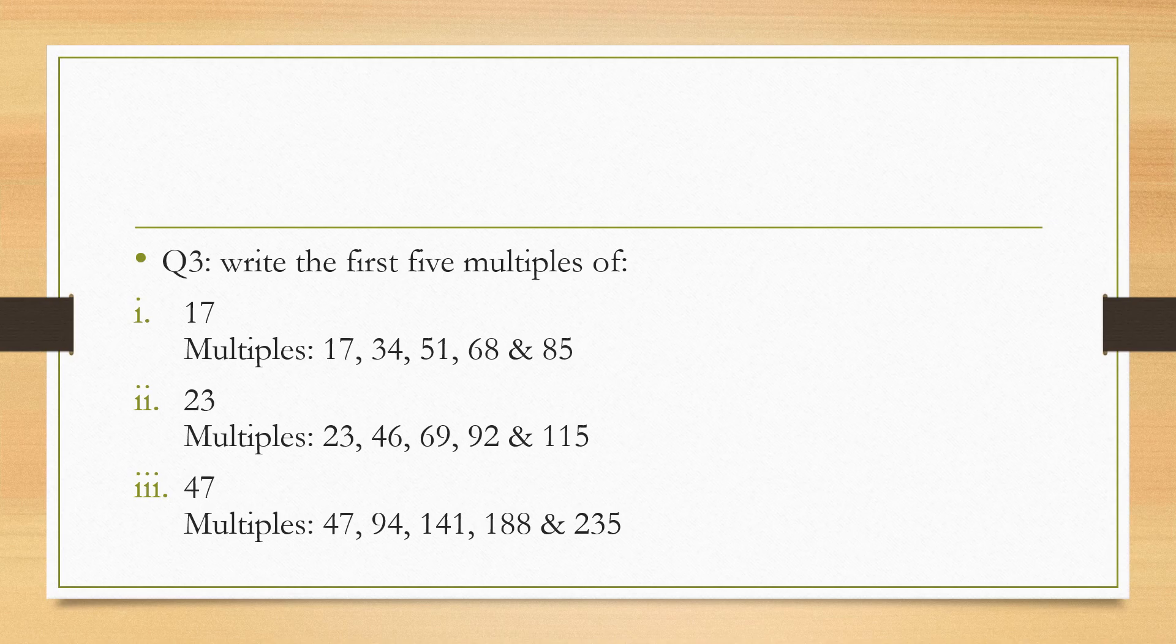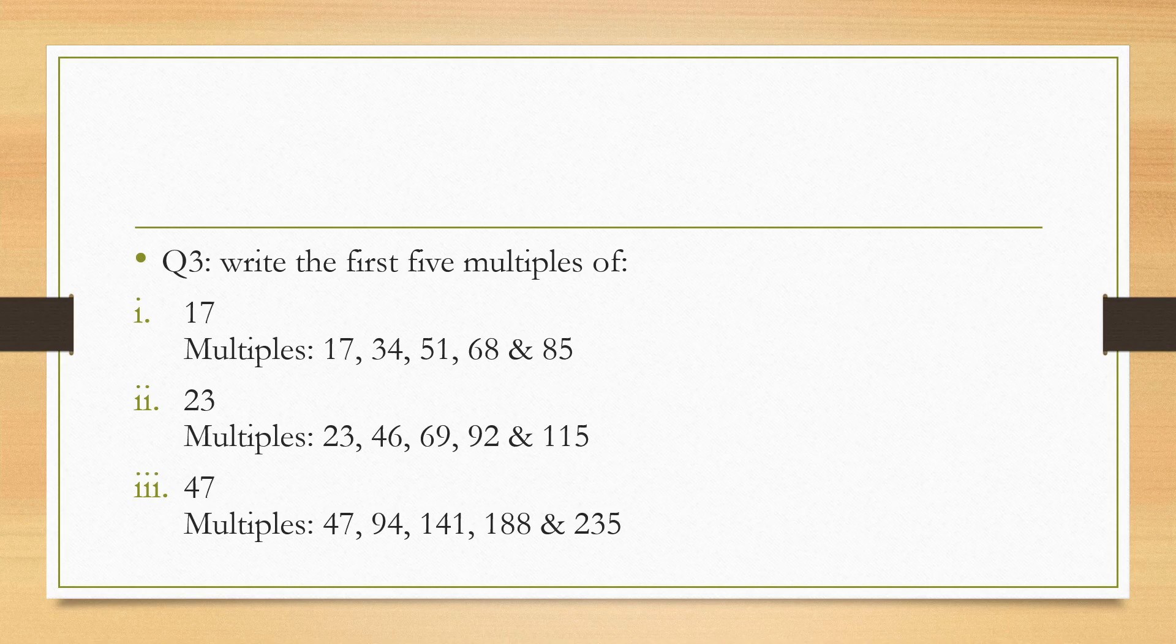Question number 3: write the first five multiples of—now the first five multiples means that we have to write the tables of these numbers, the first five only. So number one is 17. Multiples of 17 is 17, 34, 51, 68, and 85. Meaning 17 ones are 17, 17 twos are 34, 17 threes are 51, 17 fours are 68, and 17 fives are 85.